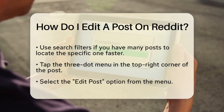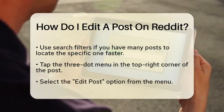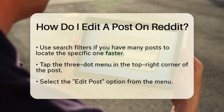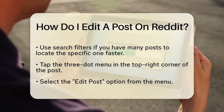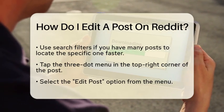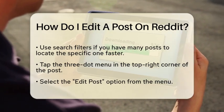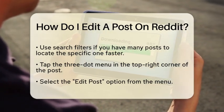Select the option that says Edit Post. This action will take you to the edit mode, where you can change the text, formatting, or links in your post.